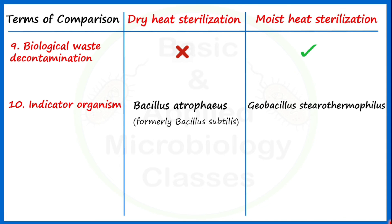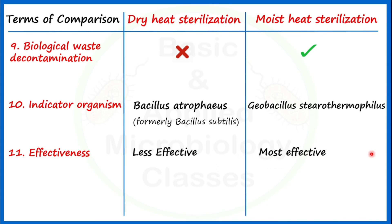The eleventh point of difference is effectiveness. Dry heat sterilization is less effective, while moist heat sterilization is most effective. This is judged based on the time and temperature combination used — moist heat uses lower temperature and less time to achieve sterilization. However, both techniques are important in practice, as certain materials can only be sterilized by one or the other method.